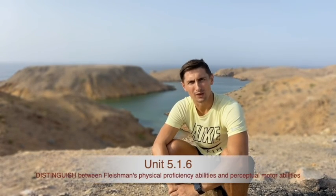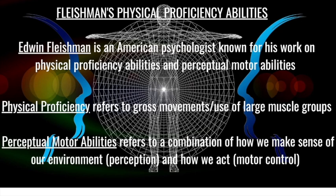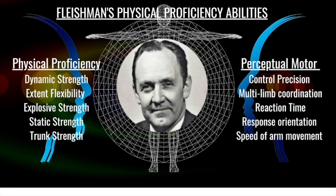5.1.6 wants us to differentiate between Fleishman's physical proficiency abilities and perceptual motor abilities. Edwin Fleishman was an American psychologist known for his work in these two areas. We have to be specific about the difference between physical proficiency and perceptual motor abilities. You don't need to recite all examples, but you should look at them to understand further — they'll help you understand without necessarily being required in the exam.